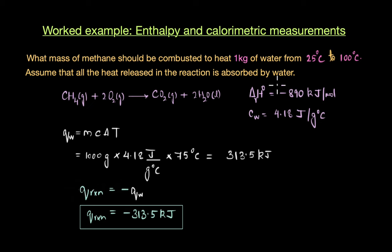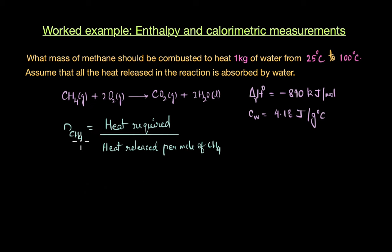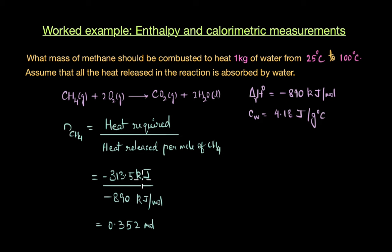Now that we've figured out the amount of heat that must be supplied, our next step is to calculate what mass of methane should be burned to produce this amount of heat energy. We can look at the ΔH° value: the standard enthalpy change is −890 kJ/mol, meaning 1 mole of methane on combustion releases 890 kJ of heat energy. The number of moles of methane required is the heat required divided by the heat released per mole: −313.5 kJ ÷ −890 kJ/mol.